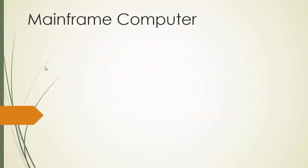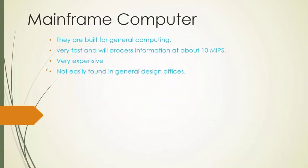Number two: Mainframe computer. Mainframe computers are built for general computing. They are very fast and process information at about 10 MIPS.